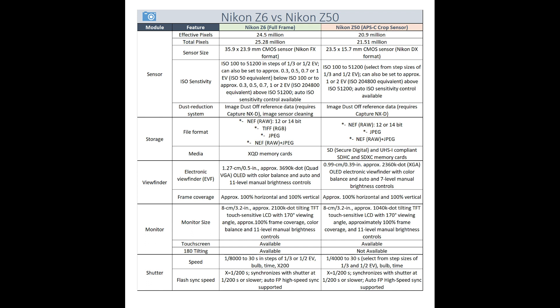If we talk about ISO sensitivity, the Nikon Z50 can go down to ISO 100, while the Nikon Z6 can go down to ISO 50. So that's another difference between the two.